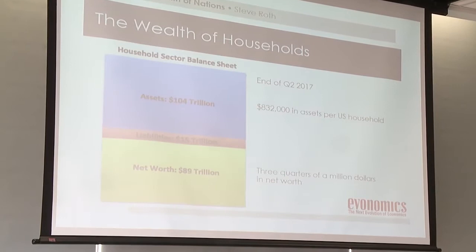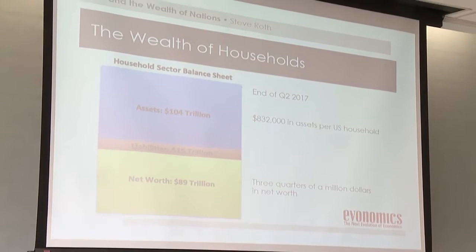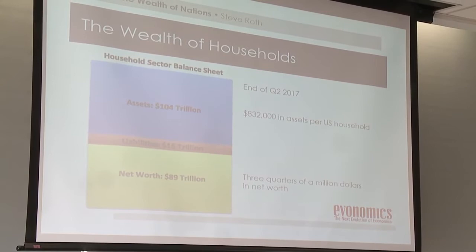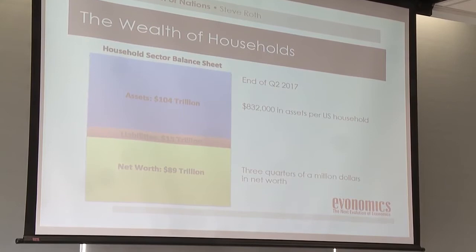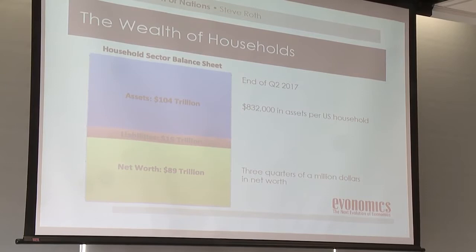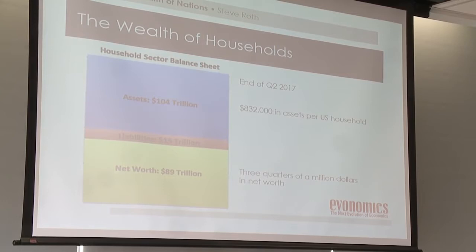To put across the magnitude of this: household assets are $110 trillion, liabilities of $15 trillion, for net worth of about $95–96 trillion. That's $832,000 for every household in America — three-quarters of a million dollars in net worth. Really small percentage shifts in these numbers produce huge economic effects, and they just don't get much attention.